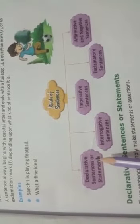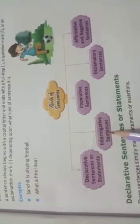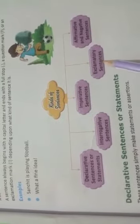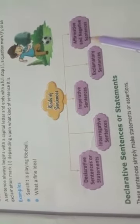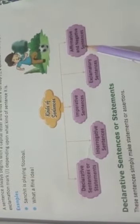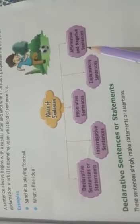There are five types of sentences: declarative sentences, interrogative sentences, imperative sentences, exclamatory sentences, and affirmative and negative sentences.